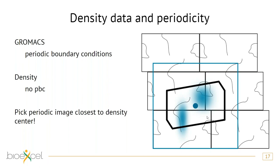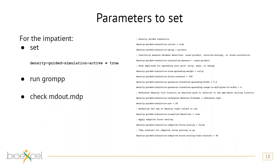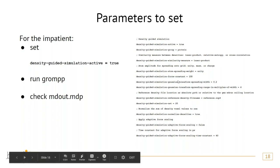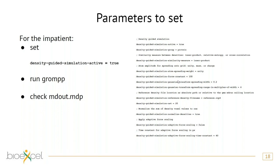The easiest way to handle periodic boundary conditions is to use roughly similarly sized maps and periodic boundary boxes. Making maps slightly smaller can also gain a bit more performance. Now I'll go through the MDP parameters one by one. If you want a brief overview, just set density-guided simulation active to true in GROMPP and look at what default parameters are generated — you'll see a brief explanation of each parameter and its default value.